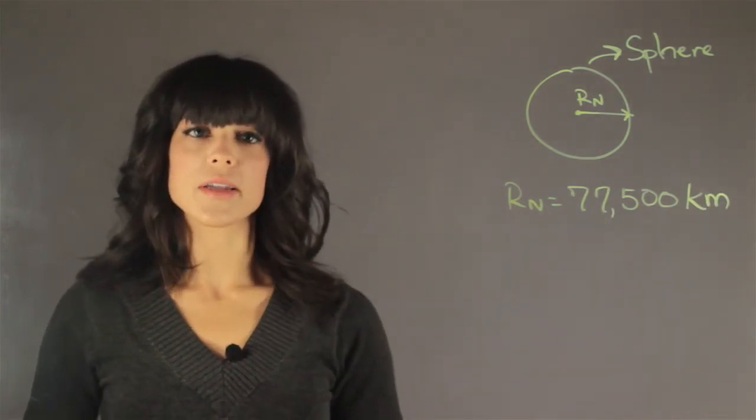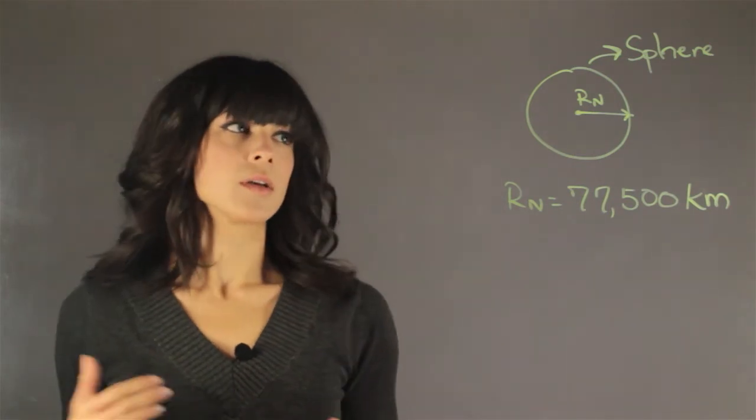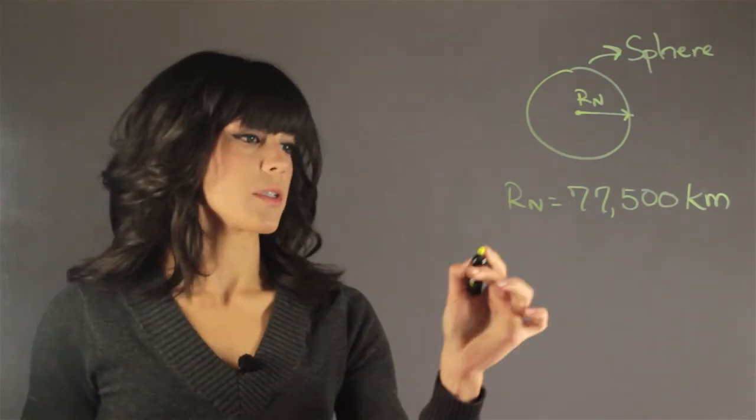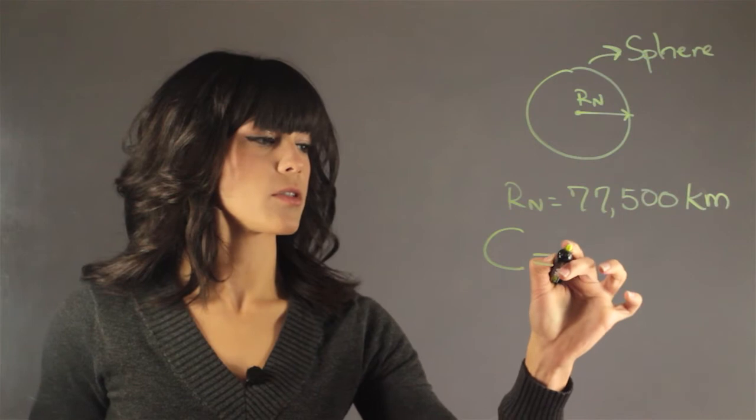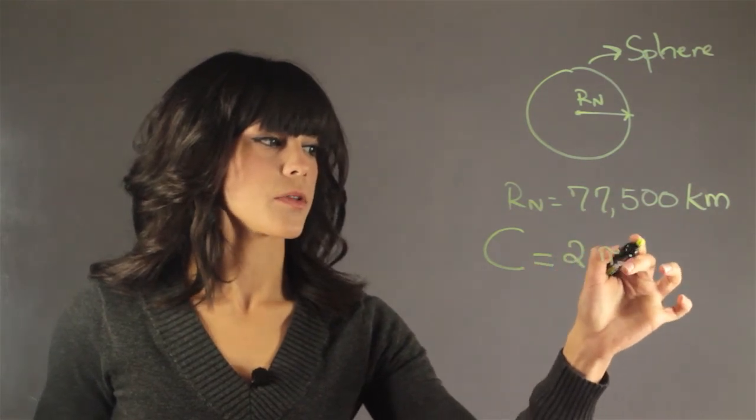Okay, so how do we find out the circumference of a sphere? Well, the circumference of a circle at this point. So the circumference is two times pi times the radius.